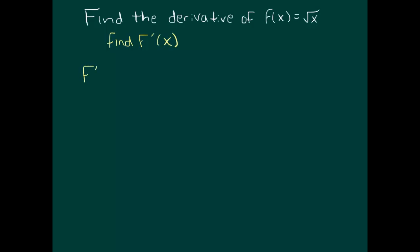So f prime of x is equal to the limit as h goes to 0, f of x plus h minus f of x over h.